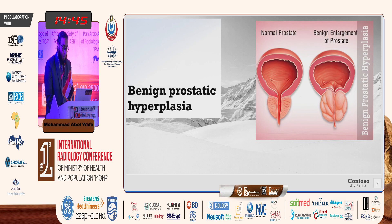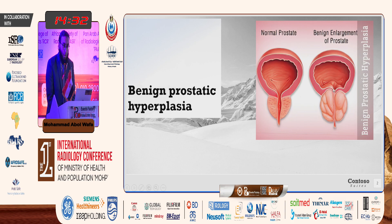In a normal prostate, the urethra passes freely through the prostatic tissue. When the prostate enlarges, usually at age of 50, it compresses the urethra and results in lower urinary tract symptoms.